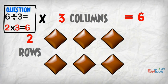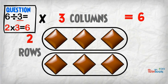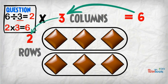If we have the question 6 divided by 3, we are making groups of 3. You can see we get 2 groups of 3. 6 divided by 3 is 2.